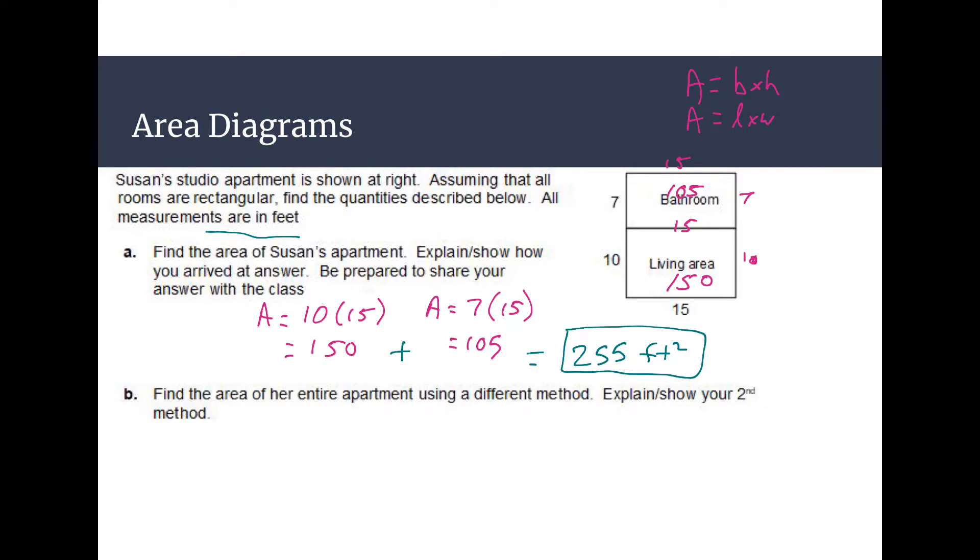So then we can also do it a different way. And we can just find the area of the whole apartment at once. And we can say well I know that the area part is going to be 15. Right, so this width right here, our base is 15. And then know that the height is going to be this entire height. Right, so instead of thinking of it as two different rooms think of it as just the one apartment.